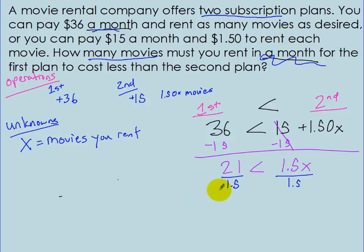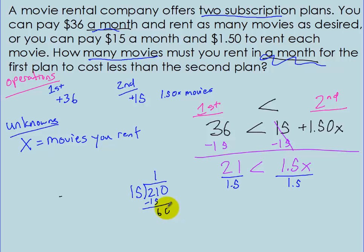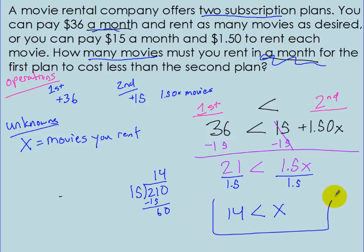Now I divide by 1.5 to get x by itself. Dividing 21 by 1.5 is the same as dividing 210 by 15, which equals 14. So the number of movies you must rent in a month has to be greater than 14. There's your answer.